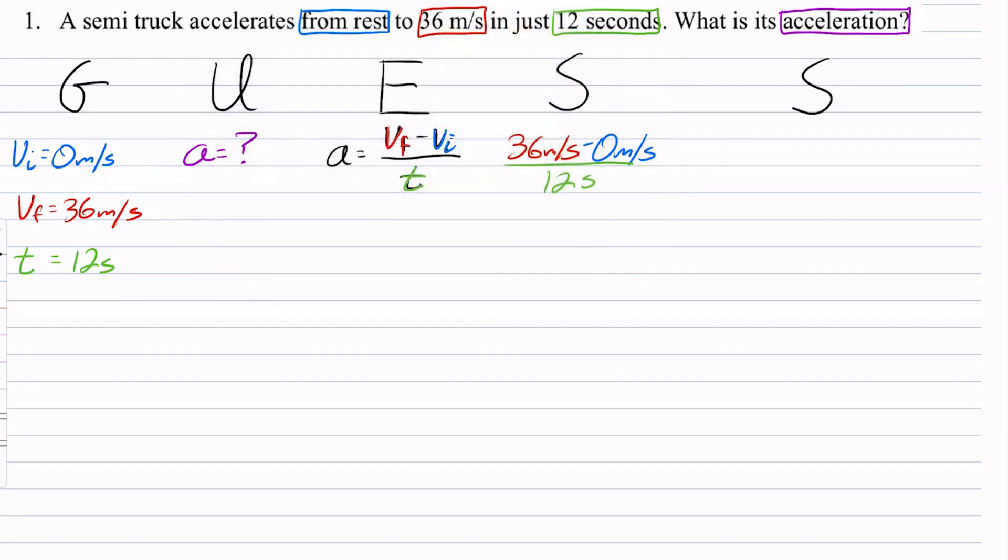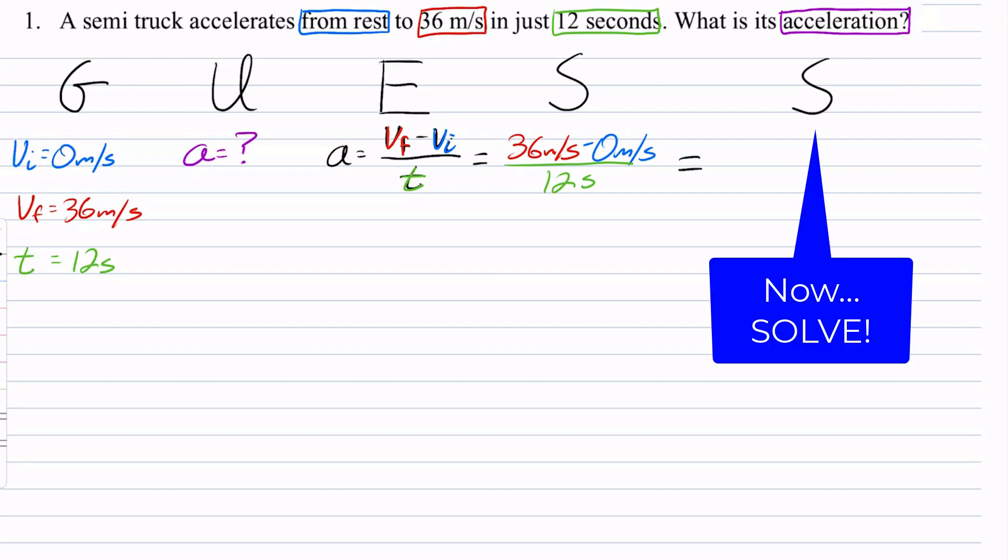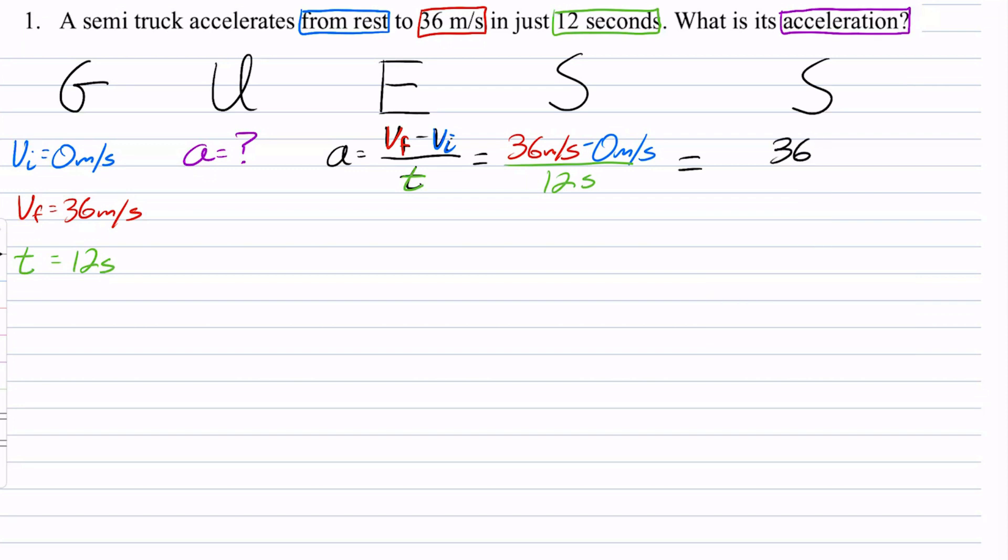Now I'm going to simplify this even further. So 36 minus 0 is 36. And that is meters per second. That is over, still over, 12 seconds.